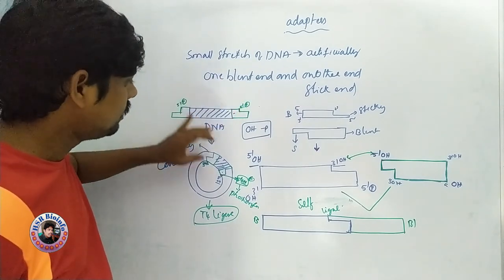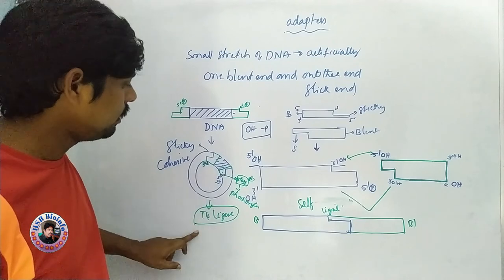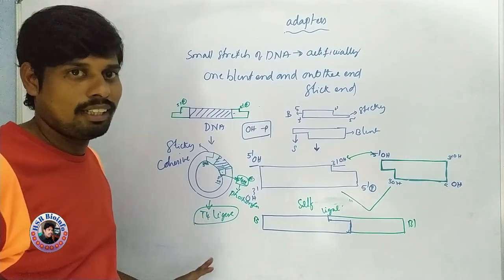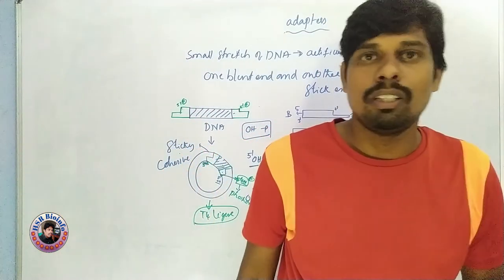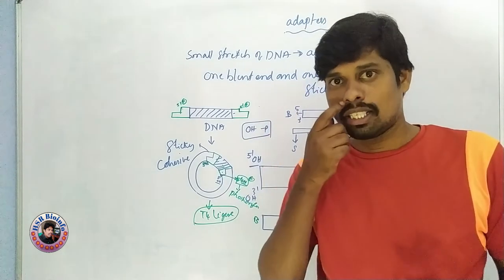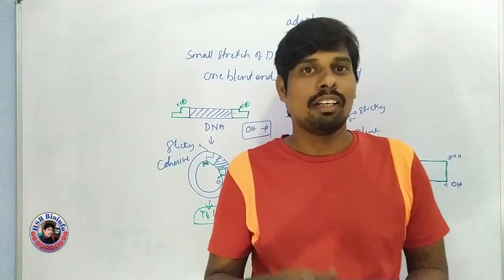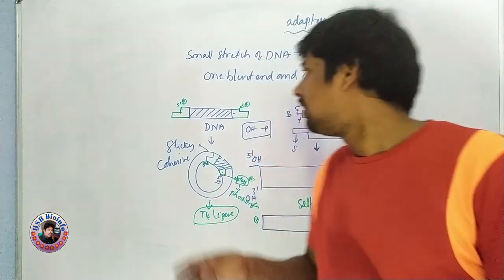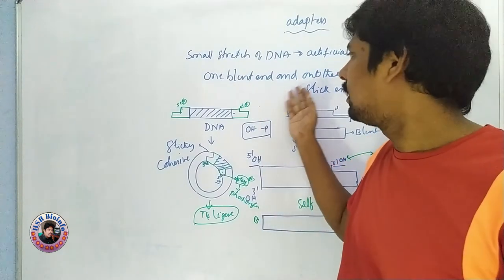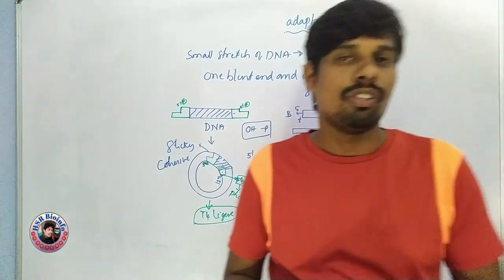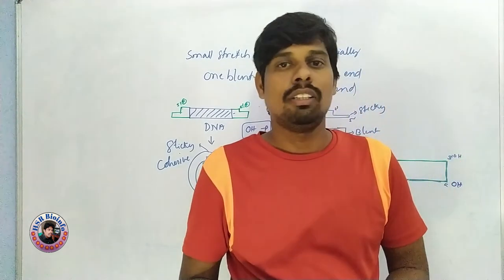Now this DNA is inserted into the vector. Finally it can be ligated by the T4 DNA ligase enzyme. This is all about the adapters — DNA stretches used in recombinant DNA technology — to address blunt ends and cohesive ends. This is the entire concept of adapters and linkers.